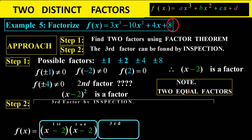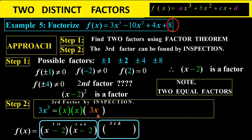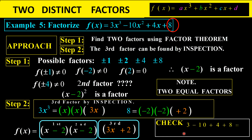For the third factor by inspection: the leading term is 3x cubed, and with x times x already found, we need a 3x. The constant is 8; negative 2 times negative 2 is 4, and 4 times positive 2 gives 8, so the third factor is 3x plus 2. Verification: (1−2)(1−2)(3+2) gives 5, matching 3 minus 10 plus 4 plus 8 equals 5. When you can only find one value, it means that factor is repeated — you can write it as (x−2) squared.